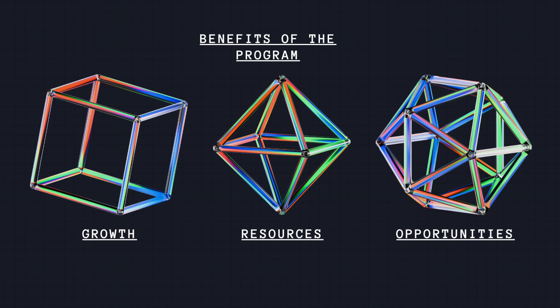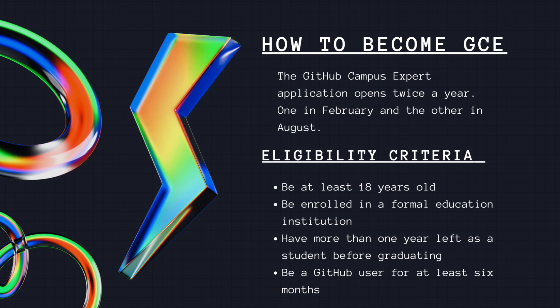It's a fantastic way to grow personally and professionally while making an impact in the GitHub community. Let's discuss how to become a GitHub Campus Expert. The program applications open twice a year — one in February and another in August. The eligibility criteria are: be at least 18 years old, be enrolled in a formal education institute, have more than one year left as a student before graduating, and have a GitHub profile at least six months old.